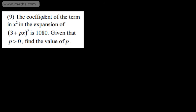In this video, we're going to do some more questions on the binomial expansion. In question number 9, we're told the coefficient of the term in x squared in the expansion of 3 plus px to the 5th is 1080. Given that p is greater than 0, we're asked to find the value of p.